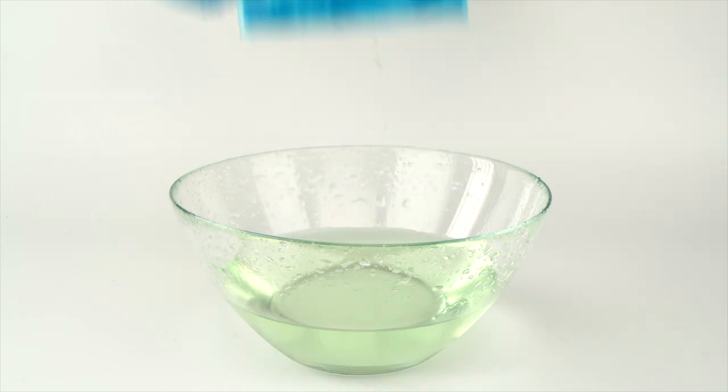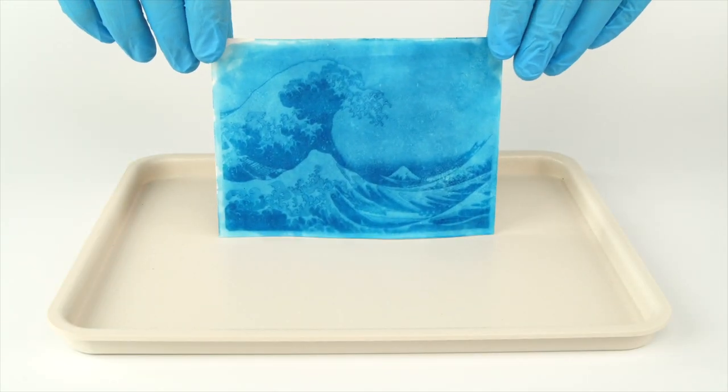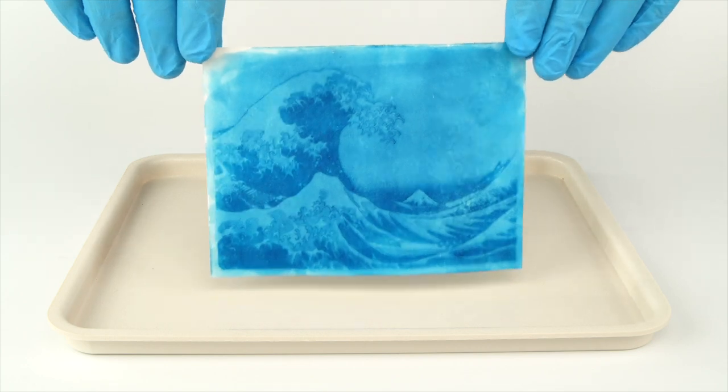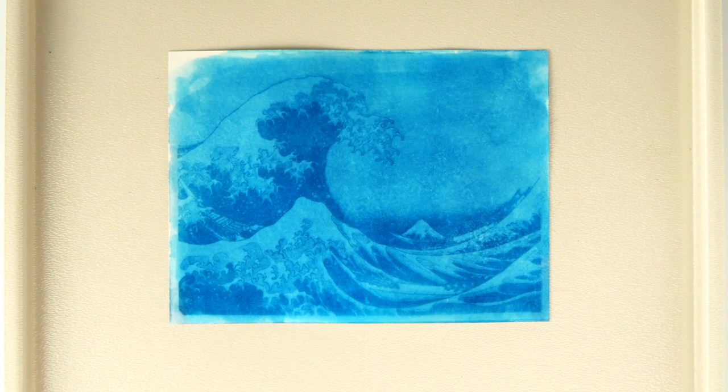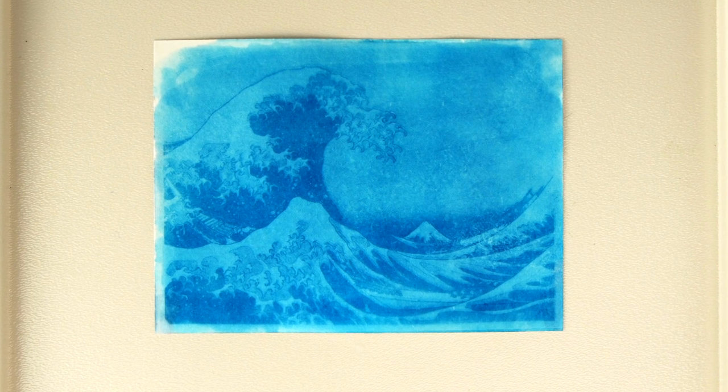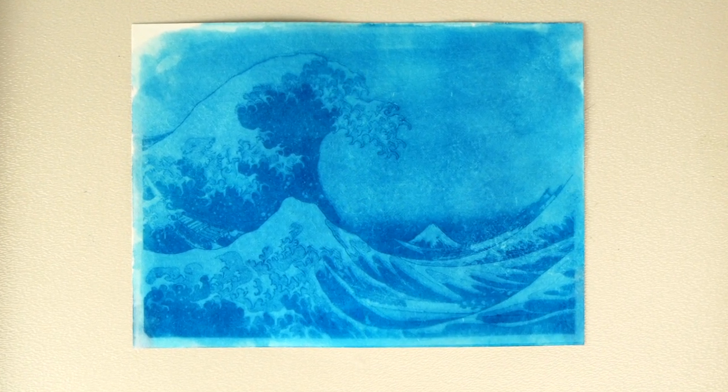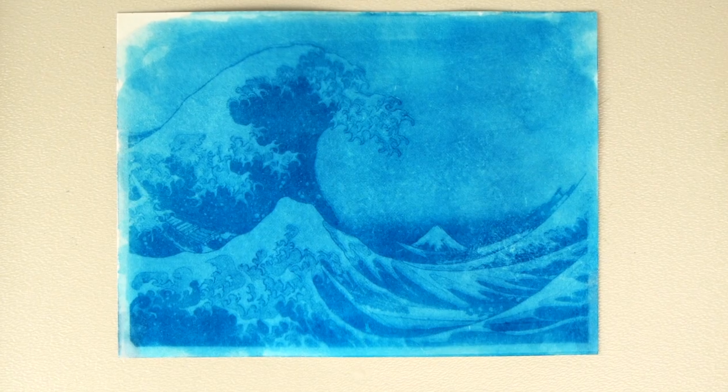Light initiates a reaction in which the iron 3 ions and ammonium iron 3 citrate receive an electron and turn into iron 2 ions. When these ions react with potassium hexocyanopherate 3, they form a stable blue compound known as berlin blue. This causes the cyanotype image to appear.